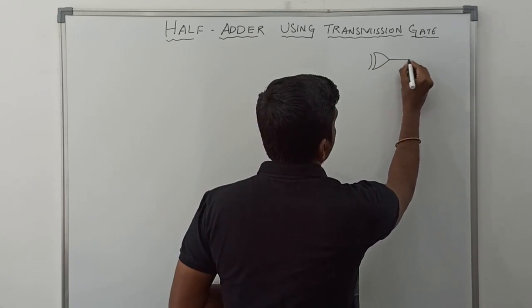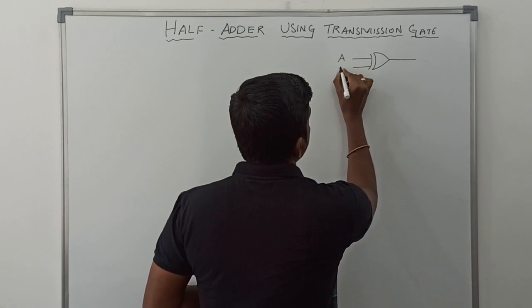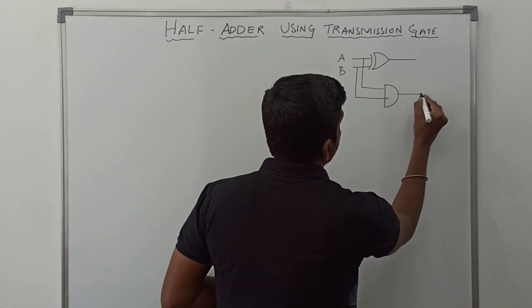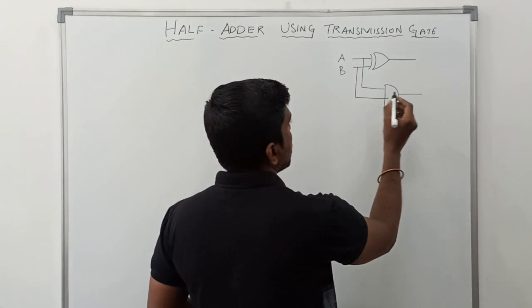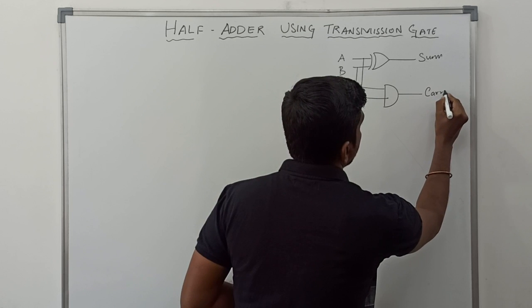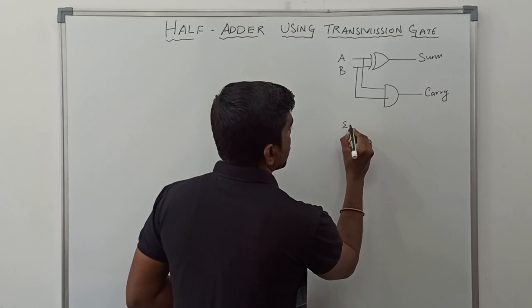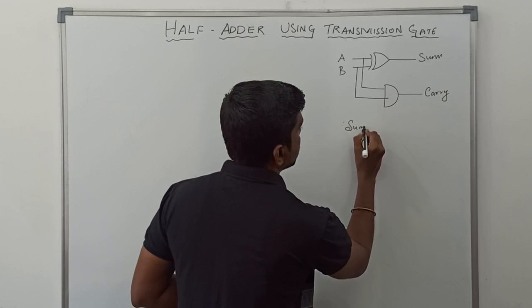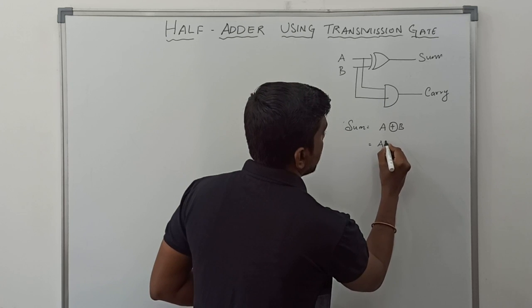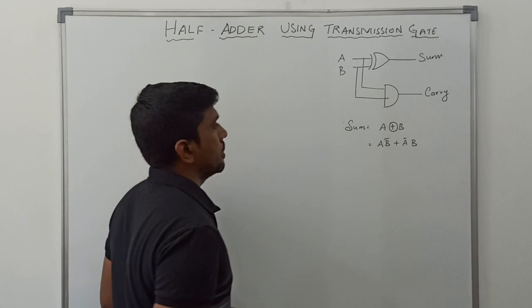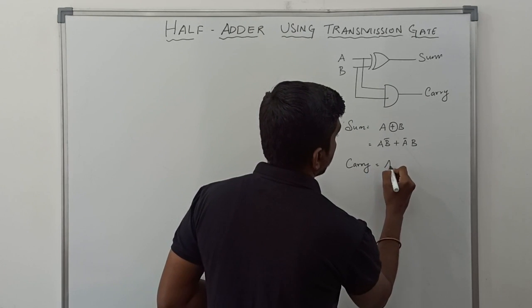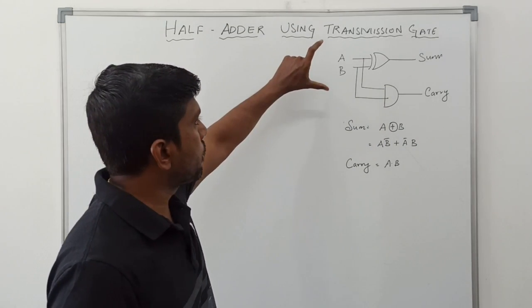In this half adder circuit it has two inputs, A and B. It's a simple circuit — the XOR gate gives the result sum and the AND gate gives the result carry. The expression for sum is A XOR B, which can be written as A·B̄ + Ā·B. The carry equation is A dot B. So it's a simple logic diagram for half adder circuit with the corresponding boolean expressions for sum and carry.